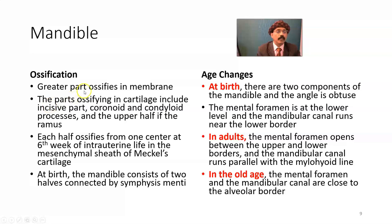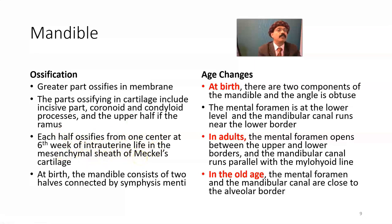Regarding ossification: the greater part ossifies in membrane. Parts ossifying in cartilage include the incisive part, coronoid and condyloid processes, and the upper half of the ramus. Each side ossifies from one center at the 6th intrauterine week in the mesenchymal sheath of Meckel's cartilage. Meckel's cartilage is a derivative of the first pharyngeal arch. At birth, the mandible consists of two halves connected by the symphysis menti.